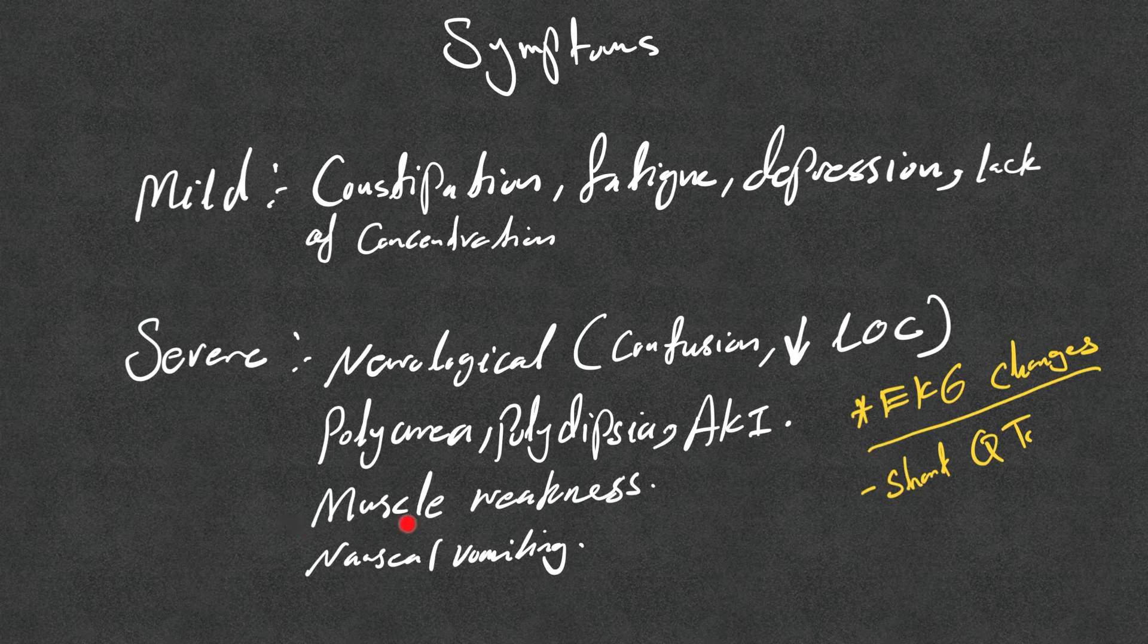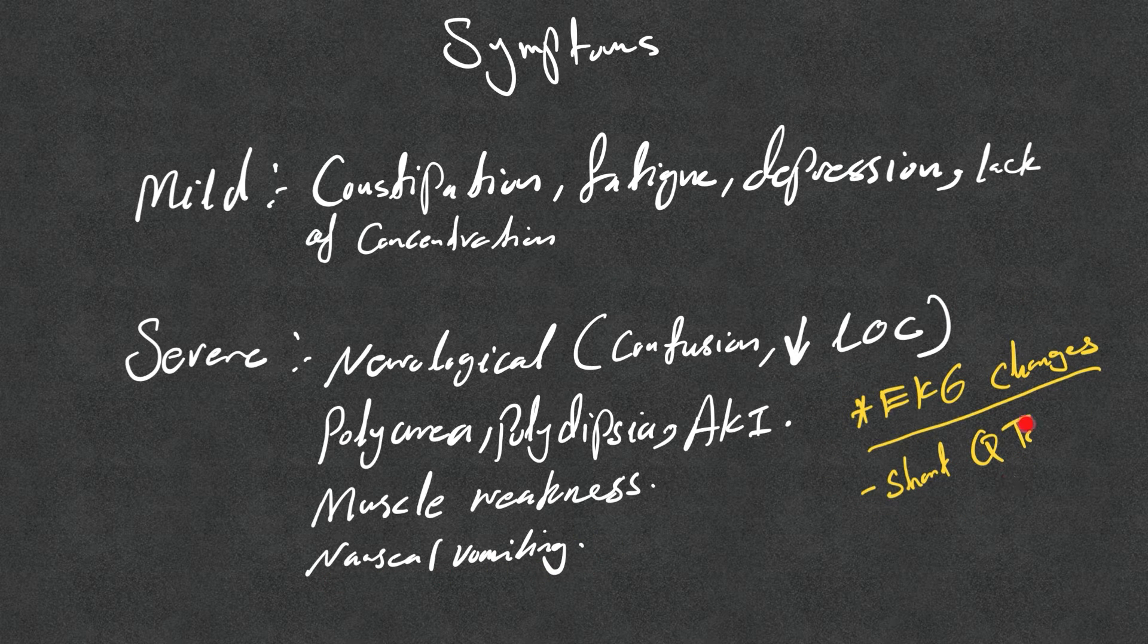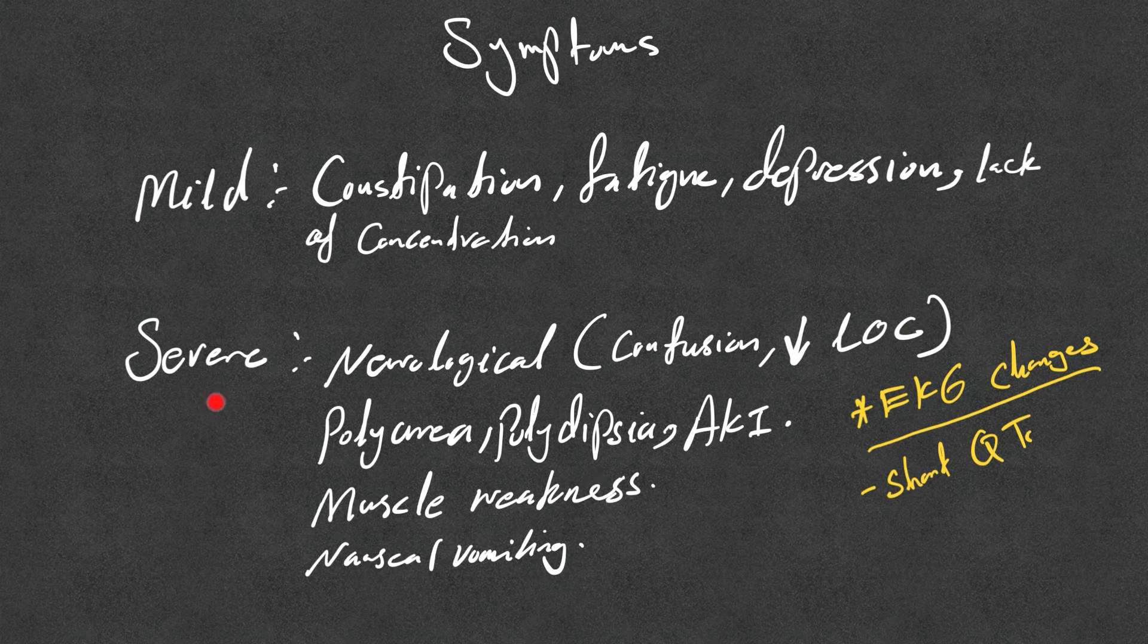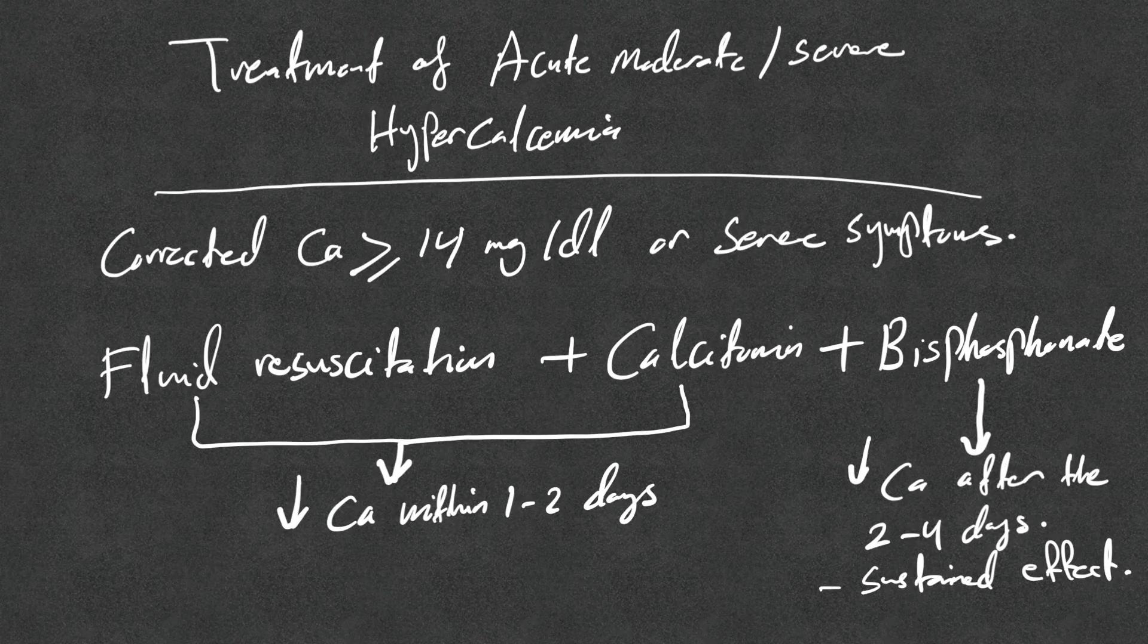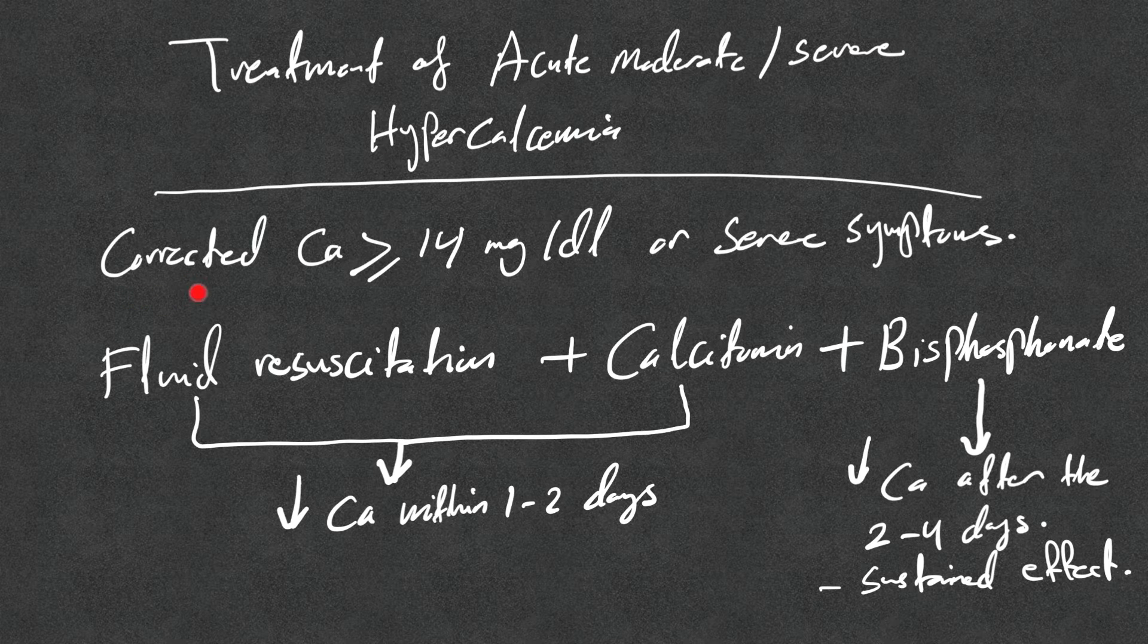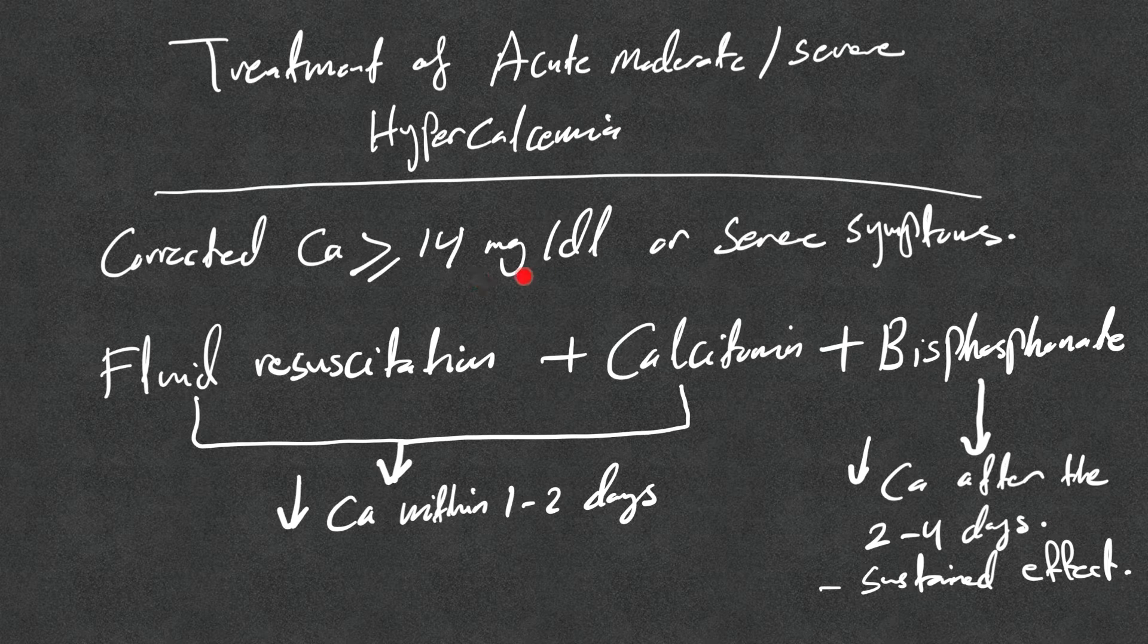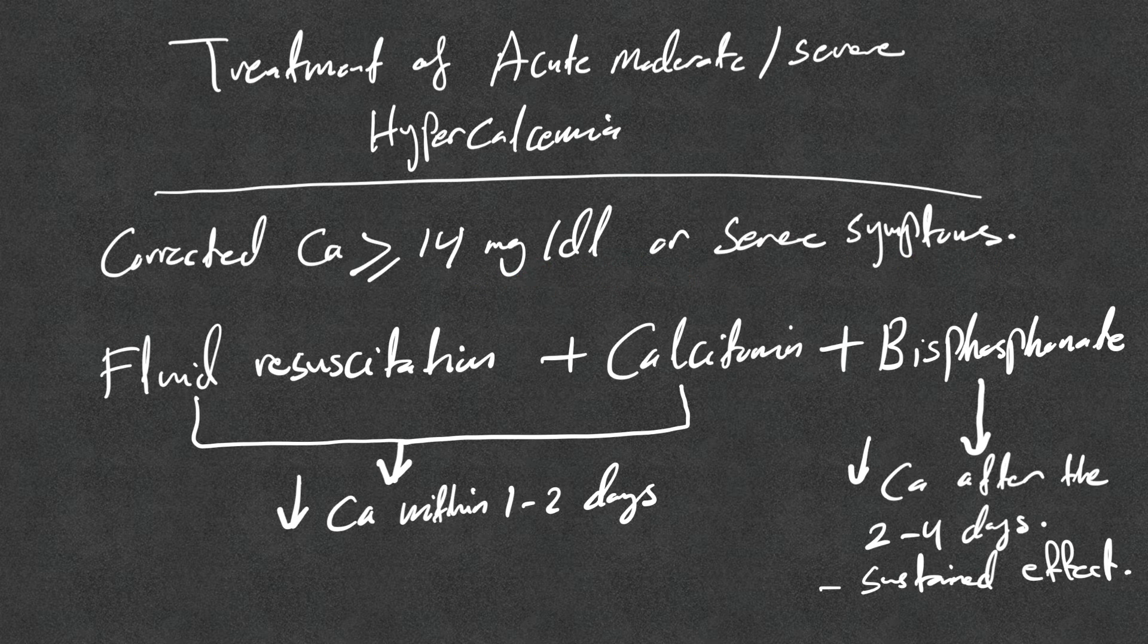Muscle weakness, nausea and vomiting. Now EKG changes like short QTc always belong to the severe signs and symptoms, so they need immediate treatment. Treatment of this acute moderate or severe hypercalcemia is inpatient treatment only. We need to have, as I said, the corrected calcium equal or above 14 milligrams per deciliter, or there are severe symptoms, or the ionized calcium as we mentioned above 10.